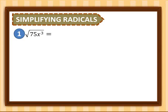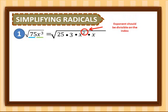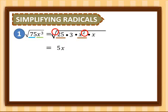Now let's simplify radicals. First example: square root of 75x cubed. Factor 75 as 25 times 3, and x cubed as x squared times x. Note that the exponent should be divisible by the index. Square root of 25 gives us 5, and square root of x squared gives us x (since 2 divided by the index 2 is 1). We leave 3 and x inside the radical. So for number 1, we have 5x square root of 3x.